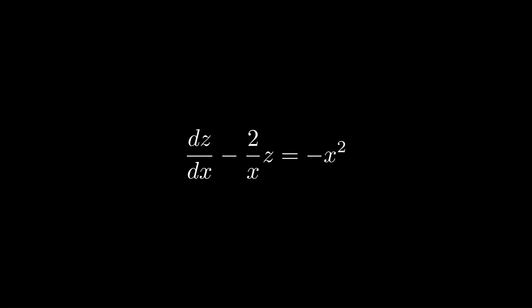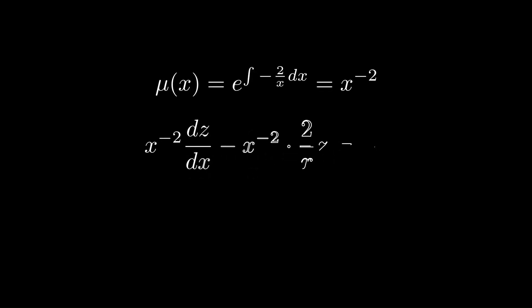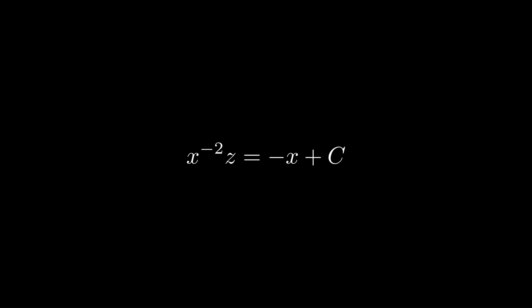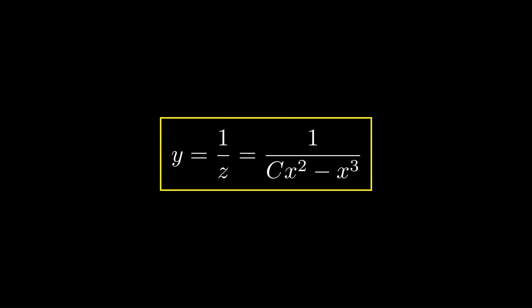We find the integrating factor, which is e to the integral of (−2/x), giving x^(−2). Multiplying that into the entire differential equation and simplifying, we get z = −x³ − c·e^x as the answer.